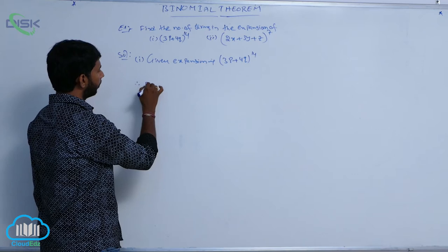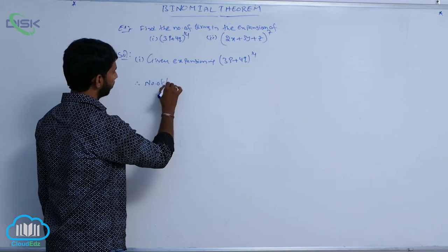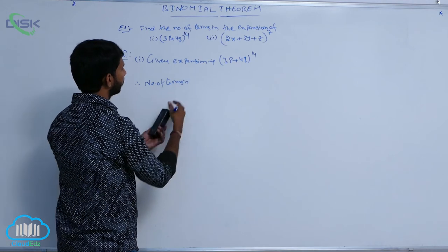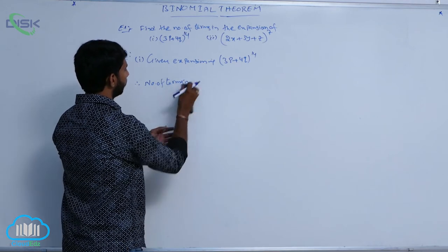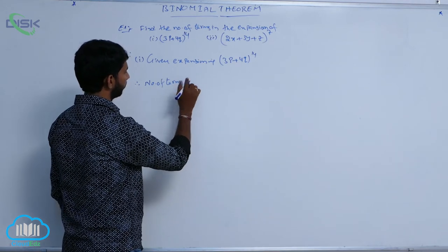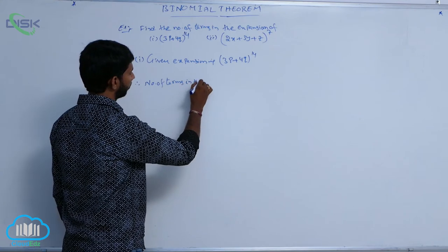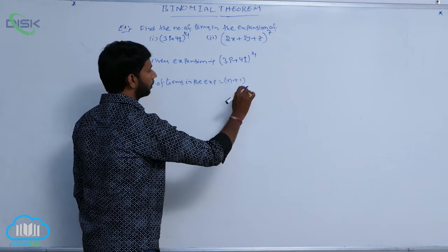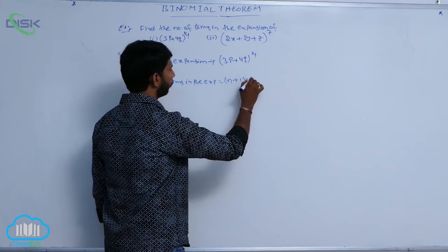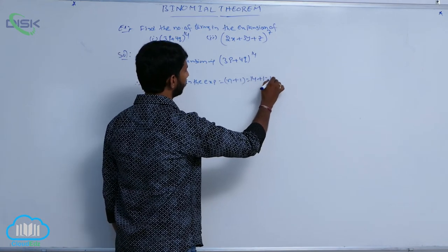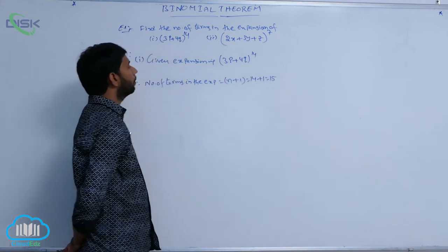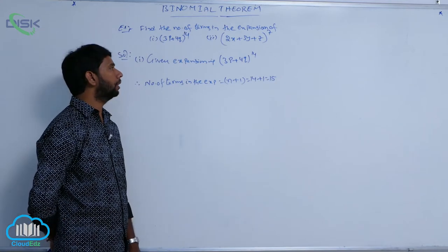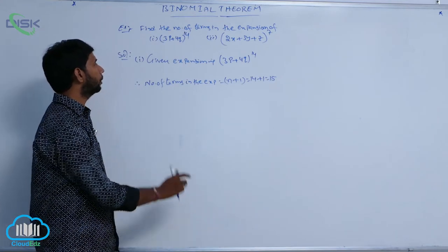The number of terms in the expansion is equal to n plus 1, which equals 14 plus 1, which equals 15. So the number of terms in the expansion is equal to n plus 1, that is 14 plus 1, equal to 15.